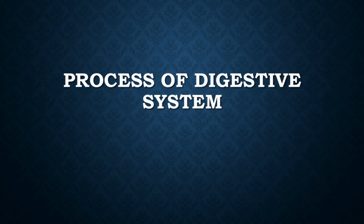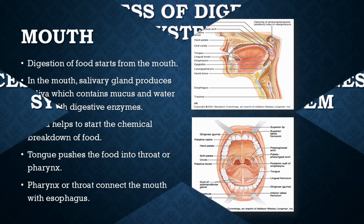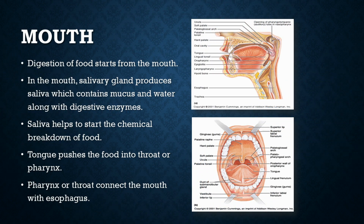Now we will see how the digestive system works. We all know that digestion of food starts from the mouth. When you swallow your food, your teeth will crush it into smaller pieces. In the mouth, salivary glands produce saliva. Saliva contains mucus and water along with digestive enzymes, and it helps to start the chemical breakdown of food. Then the tongue pushes the food into your throat, which is the pharynx.